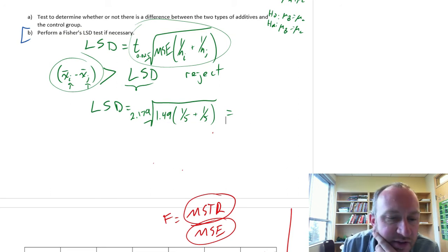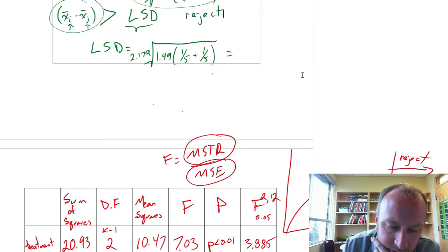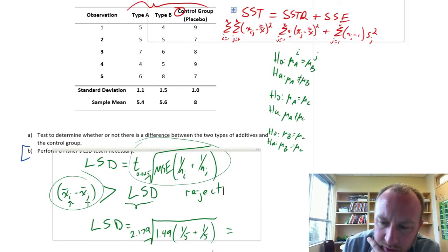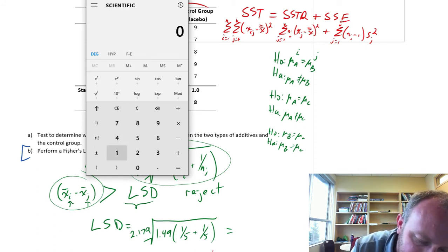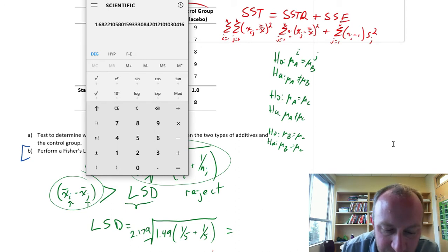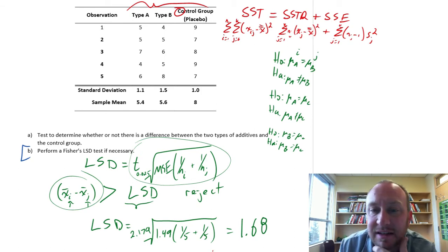Now we can go ahead and calculate the value of our LSD. Let's calculate the inside of the brackets first. This is going to be 1 divided by 5, plus 1 over 5, times 1.49, take the square root of that, and times that by 2.179. So, our LSD is 1.68. 1.68 is the value of our least significant difference.